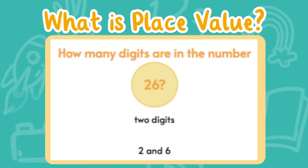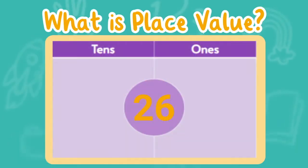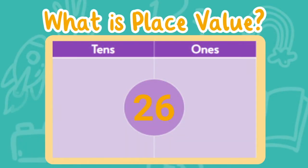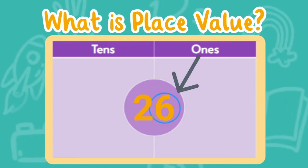Let's look at how many digits are in the number 26. There are two digits: two and six. Now let's break down the number into its place value. We are going to be looking at the ones and tens place value. Let's break down the number 26.